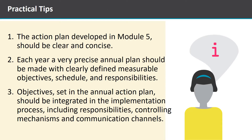Here are three practical tips. The action plan developed as outlined in module five should be clear and concise. Each year, a very precise annual plan should be made with clearly defined measurable objectives, schedules and responsibilities. And third, objectives set in the annual action plan should be integrated into the implementation process, which would include responsibilities, controlling mechanisms and communication challenges.